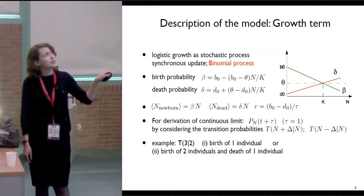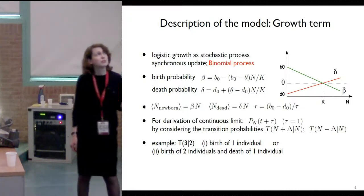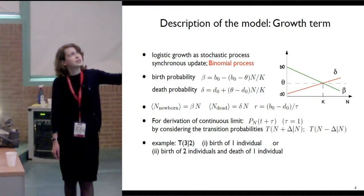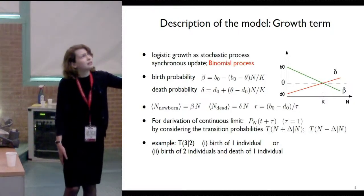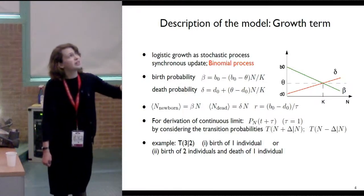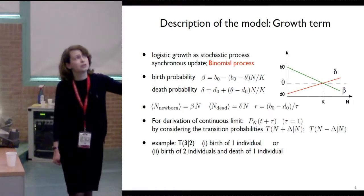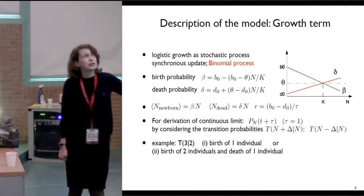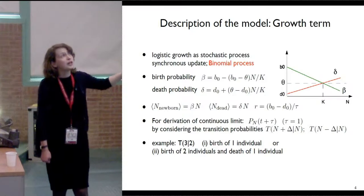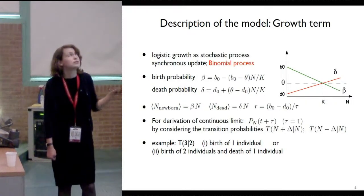The expected number of newborns is given by the birth probability multiplied with n, and the expected number of deaths is given by the death probability multiplied with n. The growth rate from the deterministic logistic growth is given as a difference between B0 and D0, divided by the time step theta. An important parameter in an individual-based model is the turnover rate theta, which is equal to birth probability and death probability when the number of individuals is equal to K. So it defines how many individuals are born and die when n equals the carrying capacity, and we can define several models that have different turnover rates, however on a larger scale they tend to the same deterministic number.